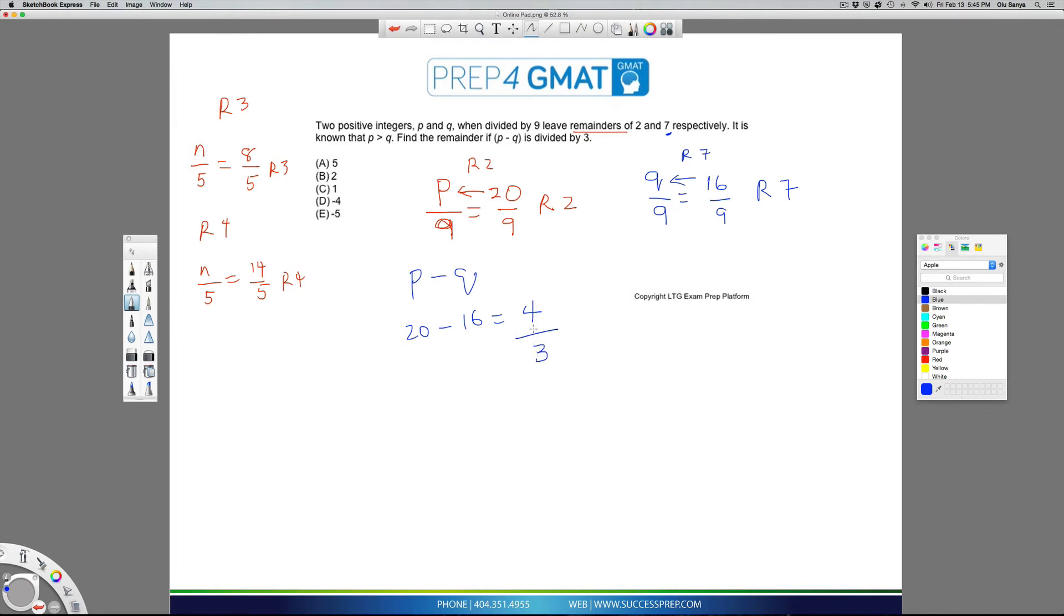Again, three goes into four, it goes as far as three, but there's one left over. So three divides into four one time, which goes as far as three, but then there's a remainder of one. And that's the answer to this question. The answer is C.